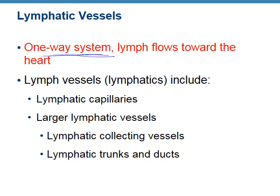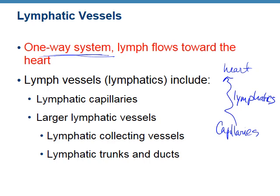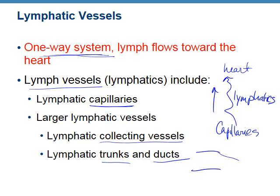This is a one-way system. In that image, the lymphatics was a one-way circulation from the capillary beds to the heart — it only flows towards the heart. Lymphatic vessels include lymphatic capillaries, then larger collecting vessels, trunks, and ducts. This is the same setup we've seen before, but going in the opposite direction: lymphatic capillary merges to a collecting vessel, then into a lymphatic trunk or duct.